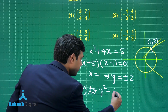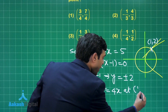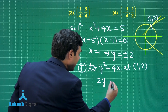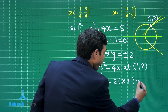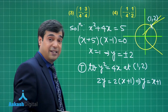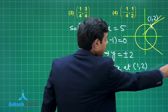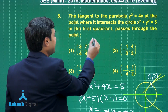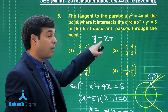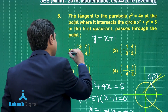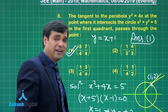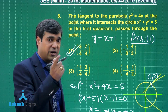Tangent to the parabola y² = 4x at (1, 2): we can write the equation of tangent as 2y = 2(x + 1), or simply y = x + 1. This is the equation of the tangent. Now checking which of the four given points lies on y = x + 1 — putting (3/4, 7/4), it is satisfied. So the correct answer is option number 1. Let us move on to question number 9.